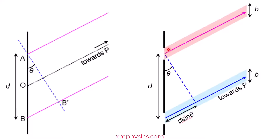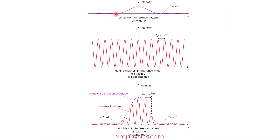So we actually have two types of interference happening at the same time. The lights from the two slits are interfering with each other to produce a double slit interference pattern, and at the same time the light from each individual slit is interfering with itself to produce a single slit interference pattern. This is a single slit interference pattern and this is the double slit interference pattern — both are happening at the same time.